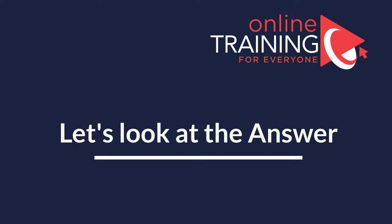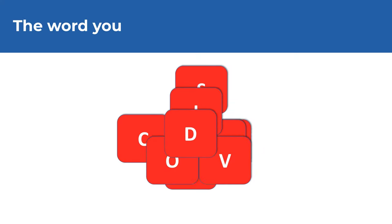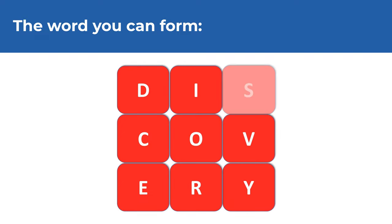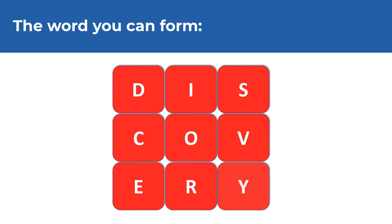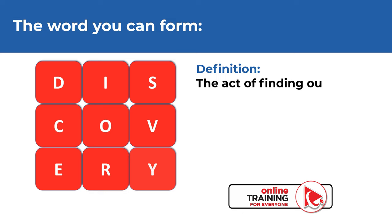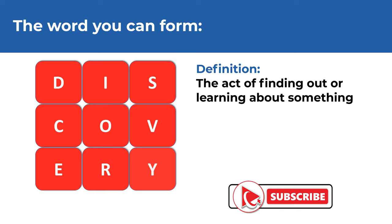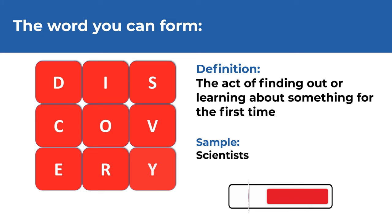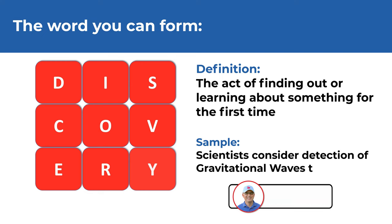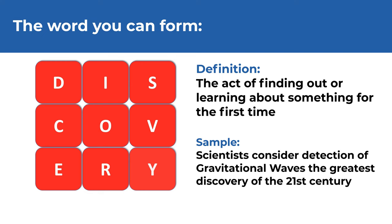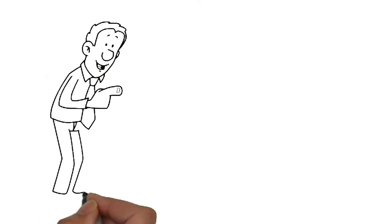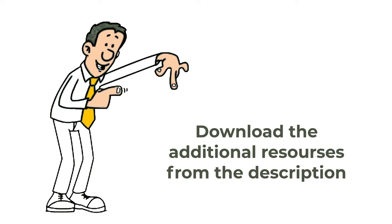The word you can form is DISCOVERY, spelled D-I-S-C-O-V-E-R-Y. The definition of discovery is the act of finding out or learning about something for the first time. Scientists consider the detection of gravitational waves the greatest discovery of the 21st century. Did you discover any other words? Make sure to post them in comments, and if you are getting ready for the test and looking for additional questions to practice, check the description of this video for links to additional resources.